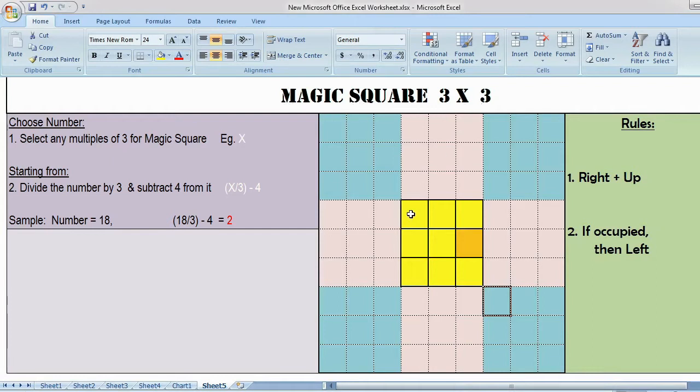These yellow color boxes are the real magic square that we are going to solve. The orange color box shows where to start the magic square. The boxes around the yellow are imaginary boxes used to solve the magic square.